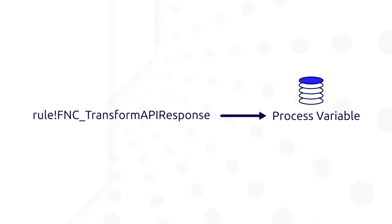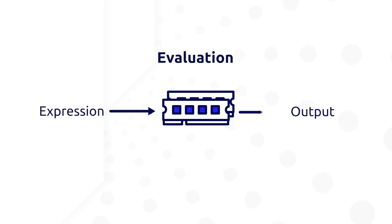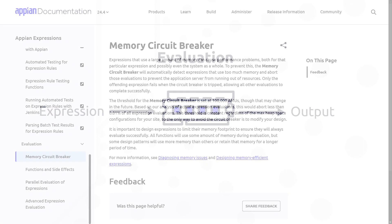then save the output to a process variable. The benefit of using expression rules is that they have their own memory circuit breaker. You can learn more about memory circuit breakers on Appian documentation.